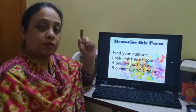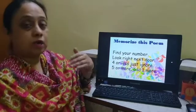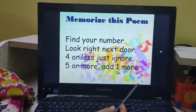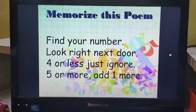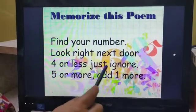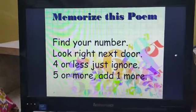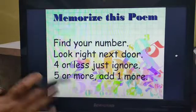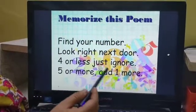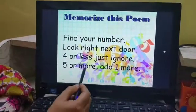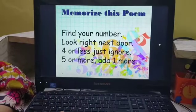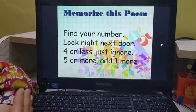We are going to do a quick recap of the points to round off any number. First, find your number. Then look right next door — that means look to the right of that number. If the number to the right is 4 or less, just ignore it — let the place value remain the same. If the digit is 5 or more, add 1 more — that is, if the digit to the right is 5 or more, the value of that place increases by 1.